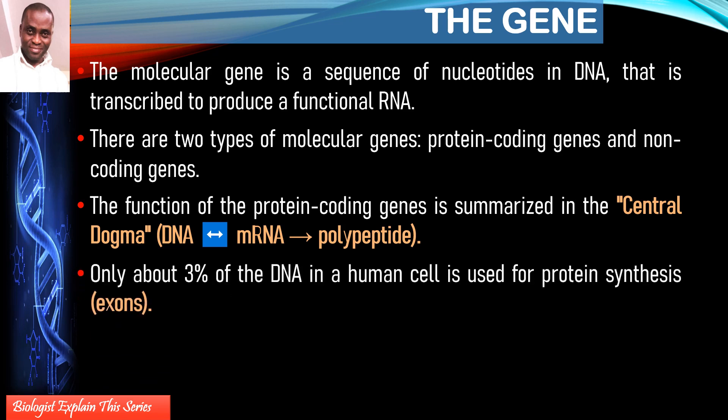In biochemistry, there is the concept of the central dogma: DNA information is copied to form messenger RNA (mRNA), and the mRNA is eventually translated or interpreted to form the polypeptide chain of a particular protein. Not all the genes on a DNA are used for protein synthesis.